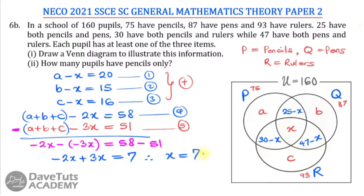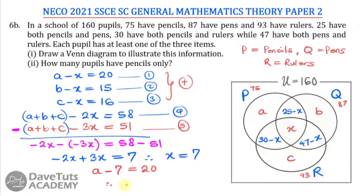But that is not what we are asked to find. We are asked how many pupils have pencils only. The number of pencils only is denoted as A. From equation 1, A minus X equals 20. Substituting X equals 7, we get A minus 7 equals 20, therefore A equals 20 plus 7, which is 27. So 27 pupils have pencils only.